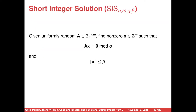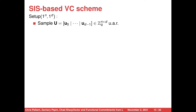Our two schemes are based on the short integer solution problem. As a brief reminder: the short integer solution problem says that given a uniformly random matrix A, the goal is to find a non-zero vector X such that A times X is equal to 0 mod q, and X is short, meaning it has length less than beta.